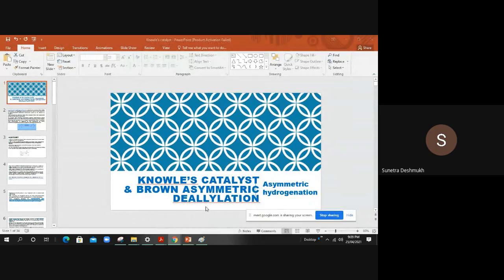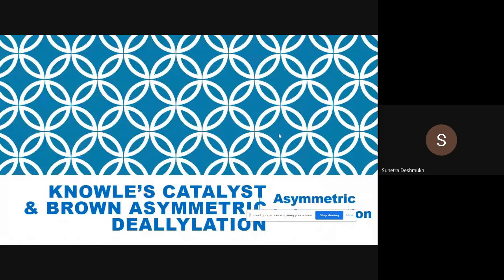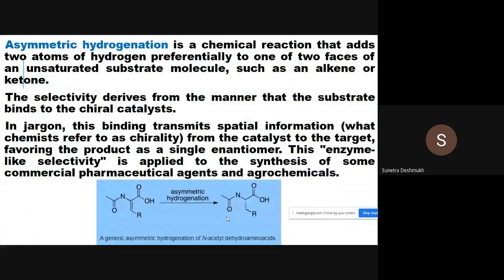In this lecture, we will see the Noyori catalyst for asymmetric hydrogenation reactions. Asymmetric hydrogenation is a chemical reaction that adds two atoms of hydrogen preferentially to one of the two faces of an unsaturated substrate molecule, such as an alkene or ketone.